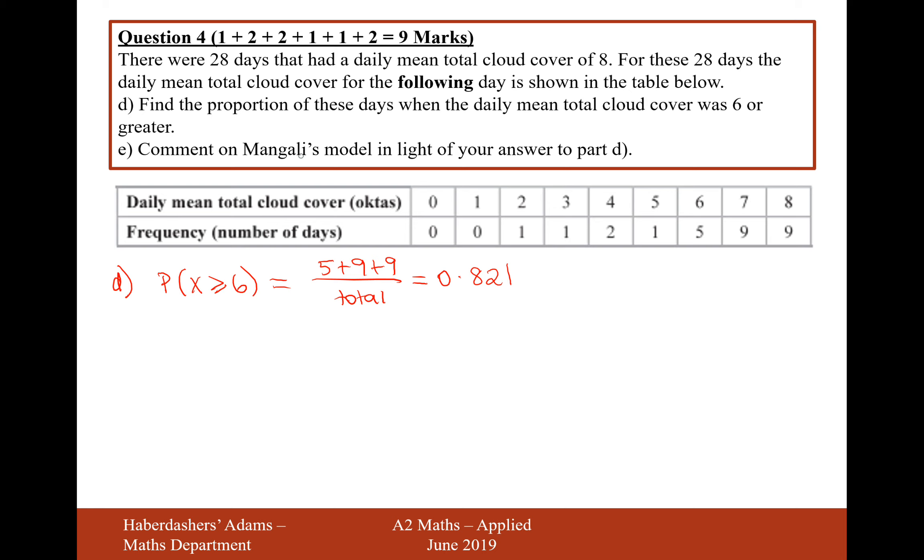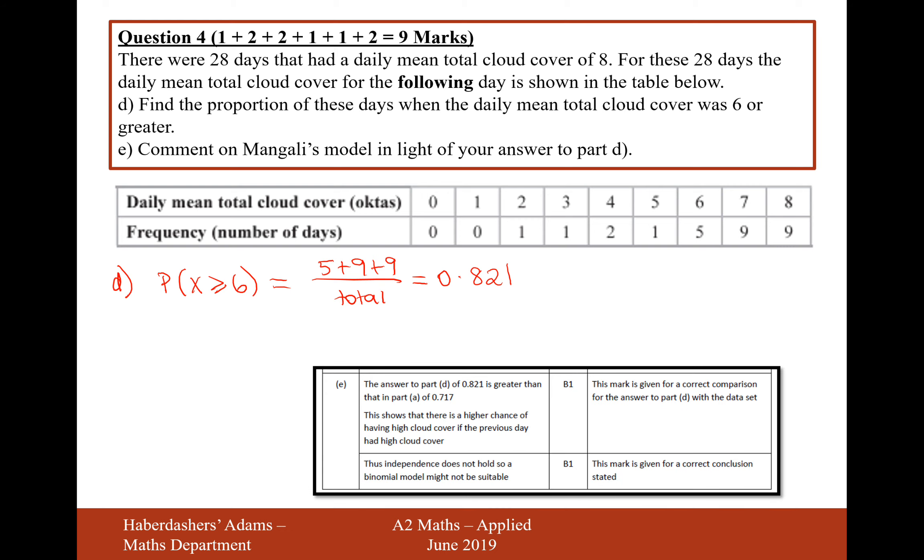So now that we've worked that out, comment on Magali's model in light of your answer to part d. Well, look at what it says in the mark scheme. The answer to part d, which is 0.821, is greater than part a, which is 0.717. This shows that there is a higher chance of cloud cover if the previous day had higher cloud cover. What this is getting to is thus.